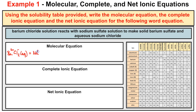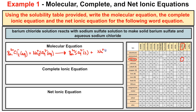Sodium sulfate: sodium is Na⁺ and sulfate is SO₄²⁻, so the formula is Na₂SO₄ aqueous. The products are solid barium sulfate (Ba²⁺ with SO₄²⁻) — confirmed insoluble on the solubility table — and aqueous sodium chloride (Na⁺ with Cl⁻), which is soluble in water. So here is our molecular equation: BaCl₂(aq) + Na₂SO₄(aq) → BaSO₄(s) + 2NaCl(aq).